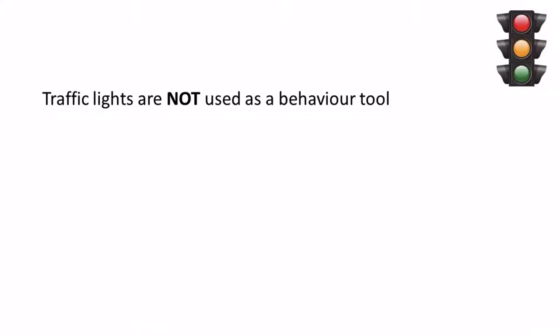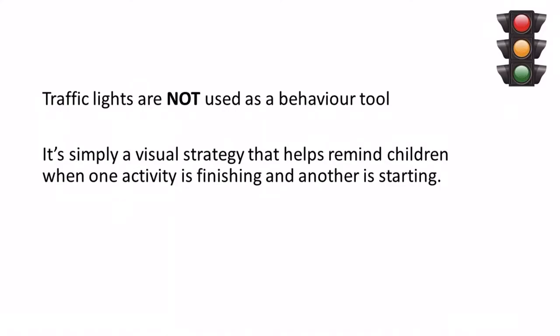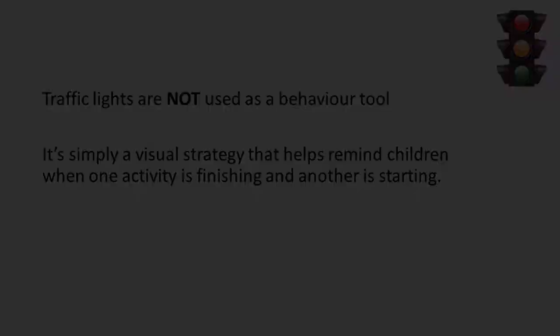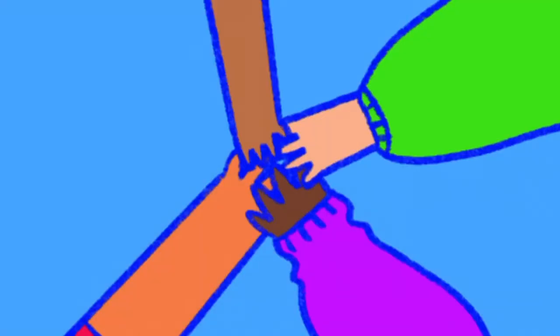Traffic lights are not used as a behaviour tool. It is simply a visual strategy that helps remind children that one activity is finishing and another is starting. Traffic lights can be used to support children who may have communication difficulties or a speech and language delay, but can benefit all children within an inclusive environment when used consistently by all practitioners.